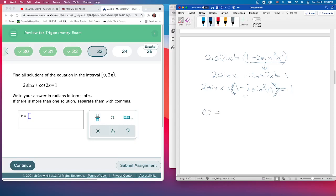I'm going to add 2 sine squared X to both sides, then subtract 1 from both sides. When I subtract 1, I get 0 on the right side. Then I subtract 2 sine X from both sides, giving me 2 sine squared X minus 2 sine X equals 0.